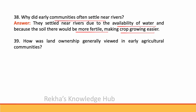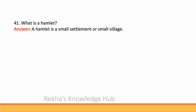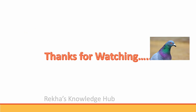How was land ownership generally viewed in early agricultural communities? There was no sense of individual ownership — lands were collectively sowed and harvested. A hamlet is a small settlement or small village.